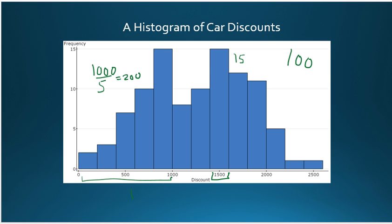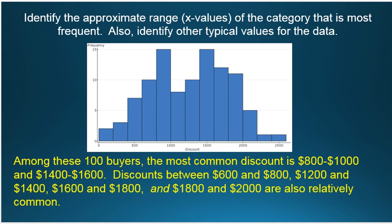So now let's interpret this histogram. Step one, it says identify the approximate range, x values, of the category that is most frequent, and identify other typical or frequent categories for this data. So here's my response in terms of the problem, since I'm talking about car discounts.